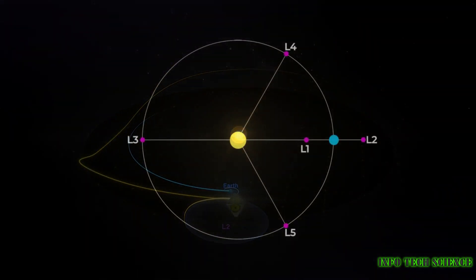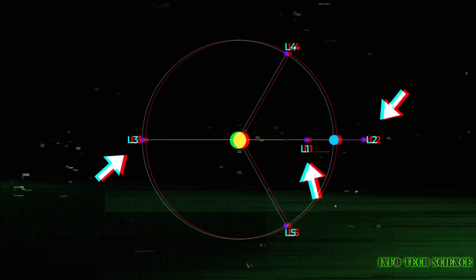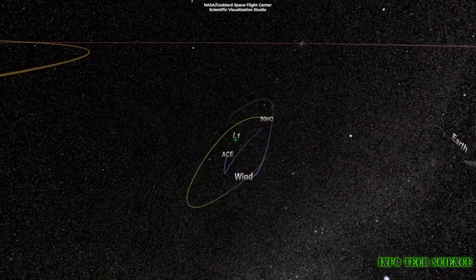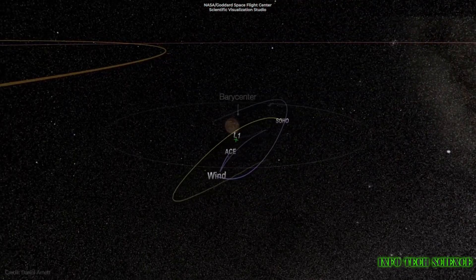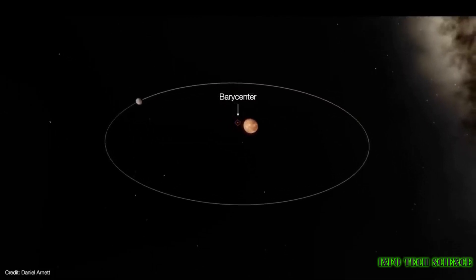Now, why did scientists decide to place the James Webb Space Telescope at the L2 point? Well, this unique location offers some incredible advantages for astronomical observations. First, L2 is located directly behind Earth, relative to the Sun.